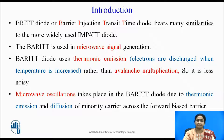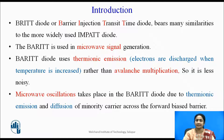BARITT diode is an abbreviation for the Barrier Injection Transit Time diode, which belongs to the same family as the widely used IMPATT diode. In the previous lectures we have seen the IMPATT diode, and this BARITT diode belongs to that same family.